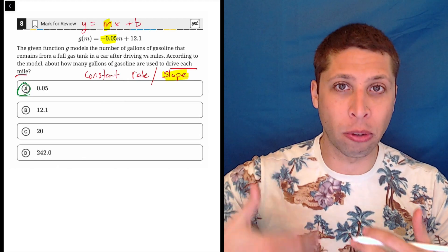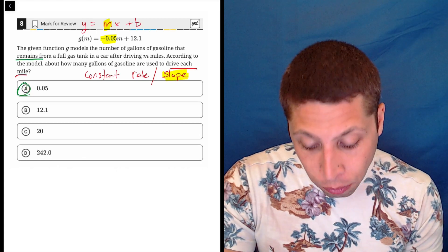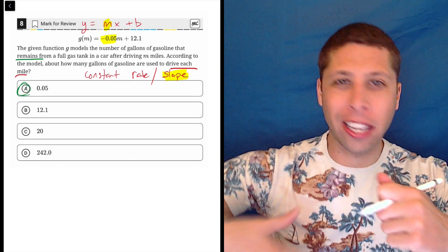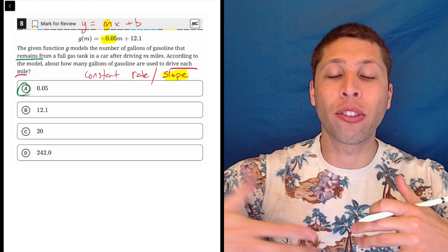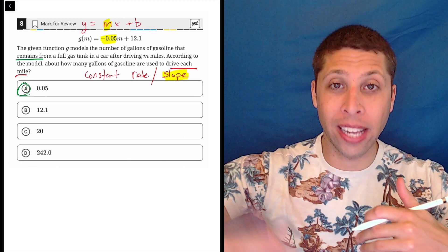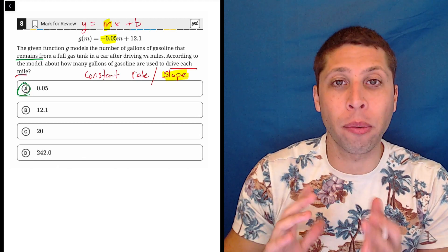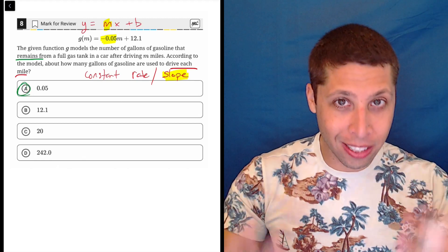But remember, the story is supposed to tell us how many gallons of gas remain. So we're losing gas at each second or minute or mile or whatever it is. So we're losing gasoline. That's the rate. That's the slope. And then the question is phrasing it in such a way that we're able to lose the negative, but it's still behaving the same way.